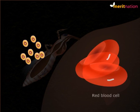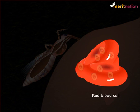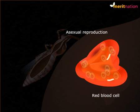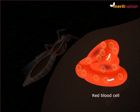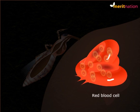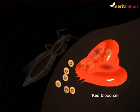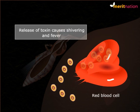In the red blood cells, they undergo asexual reproduction. After that, they rupture the red blood cells and release toxins which produce shivering and fever.